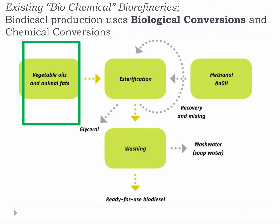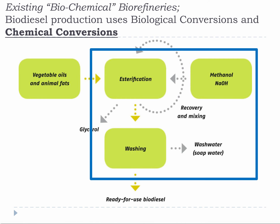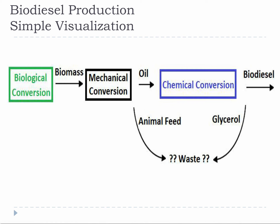You have also seen this diagram before and it shows the approximate biodiesel process minus the mechanical conversion. Biodiesel integrates biological conversions, roughly shown inside the green square, with chemical conversions shown inside the blue square. Notice how the simple visualization contains a mechanical step that wasn't shown in a highlighted box — that is not because it wasn't necessary, but because the diagram didn't bother to show it. You have to be able to not only read the diagrams but also think about them, because they often don't tell the whole story. The waste from biodiesel is always present, whether it is treated as a waste or a product.